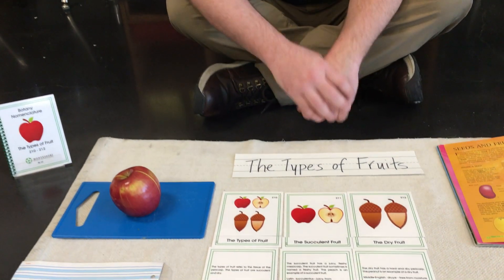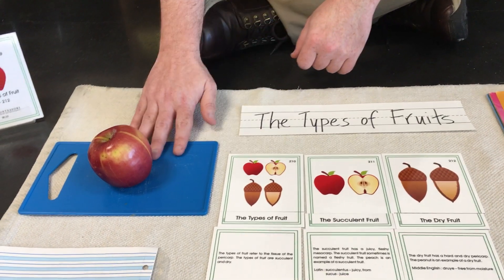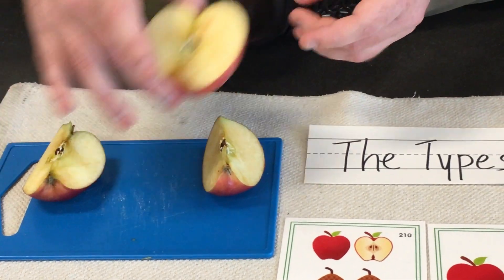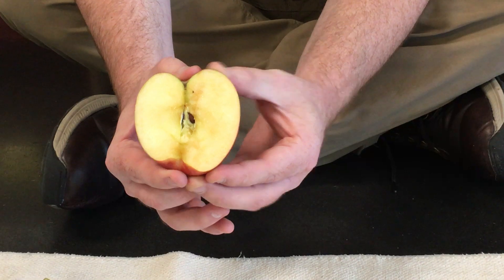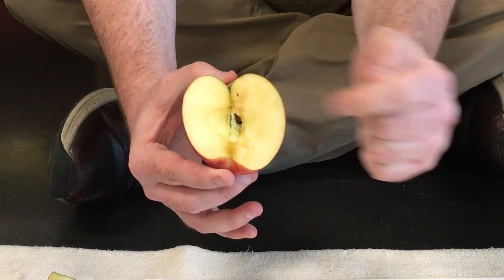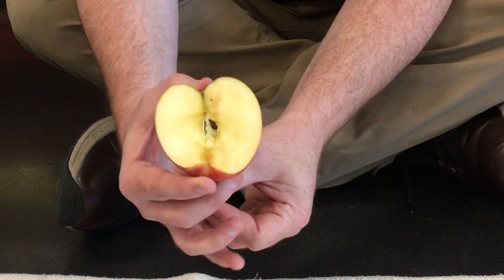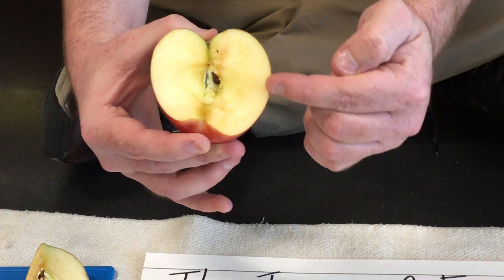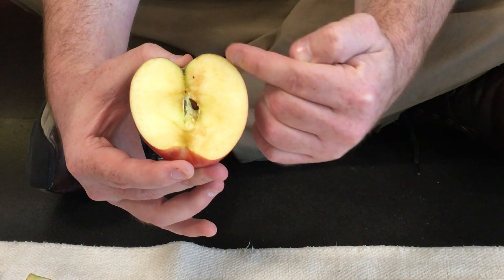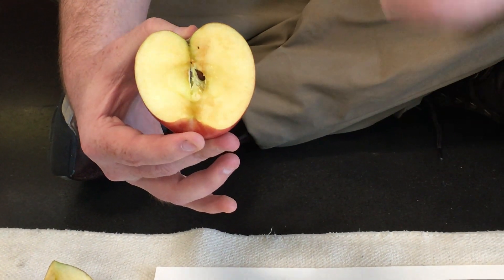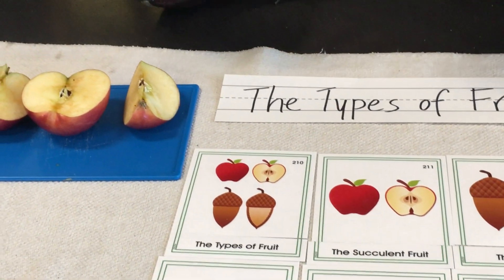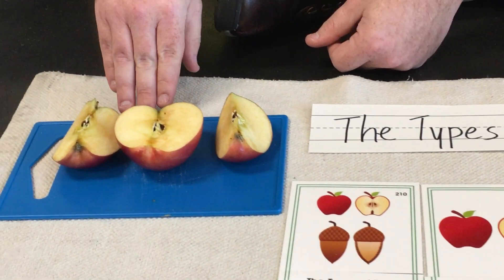One type of fruit, which I'm sure we're familiar with, is the succulent fruit, like an apple. The succulent fruit, as we went over in the last lesson, is very juicy. Quick reveal — remember the parts of the fruit? Pericarp, mesocarp, endocarp, and the seed on the inside. The succulent fruit is named succulent because that word means juicy or having moisture. The succulent fruit has a very juicy mesocarp. It's got a lot of liquid. It's sweet. It's the kind of fruit we usually think of — apples, apricots, peaches, plums, and grapes. All the fruit that has lots of moisture.